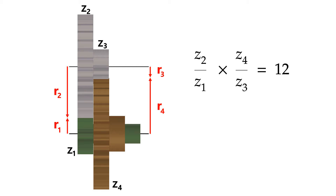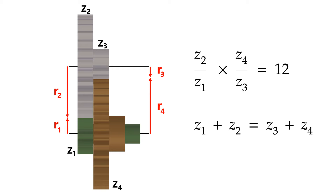Let R1, R2, R3, and R4 denote their radii. We have the following restrictions: Z2 divided by Z1 times Z4 divided by Z3 should equal 12. Also, since the input and output axes coincide, the gear radii must satisfy: R1 plus R2 must equal R3 plus R4. For simplicity, let's assume all four gears have the same module. This means the radii are proportional to the number of teeth, and therefore we can replace R's with Z's.